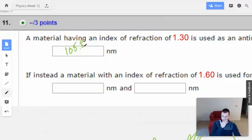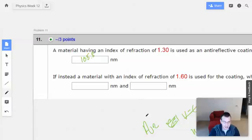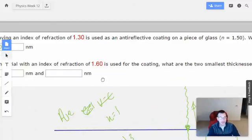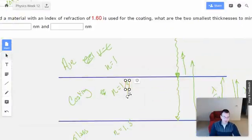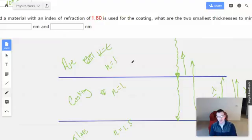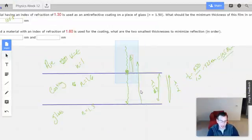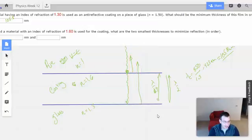So now they're like, well, instead of material with an index of refraction, this time we use a material of 1.6. So this actually introduces a new concept. This is the idea of a phase shift.